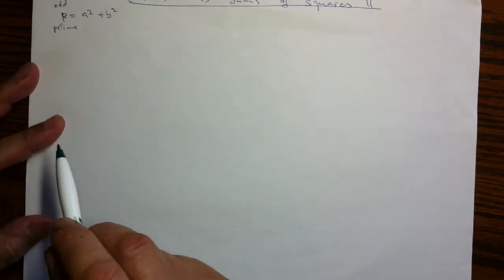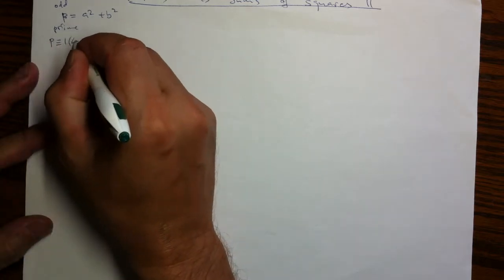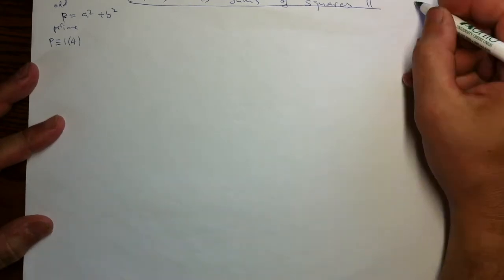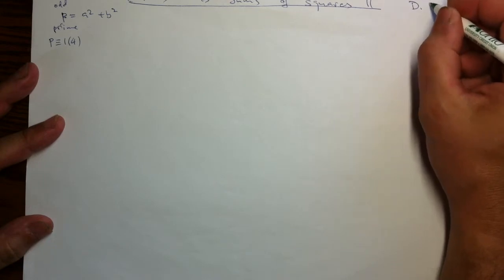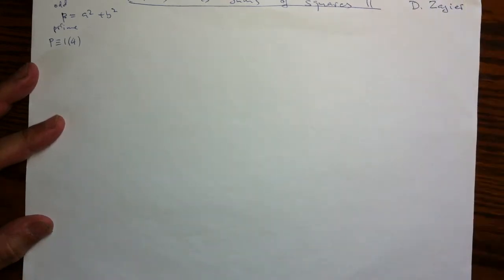Let's prove the converse now. So we will assume that P is congruent to 1 mod 4, has remainder 1 divided by 4. And let's argue following Zagier's brilliant idea that it is possible to find a and b.